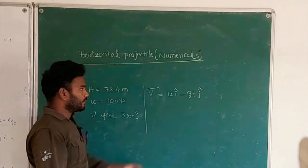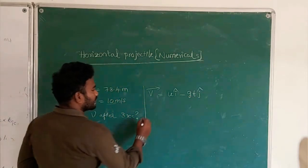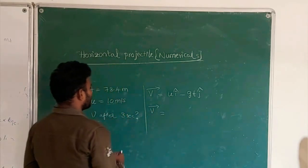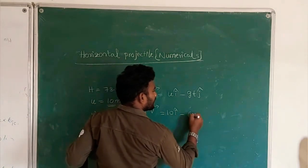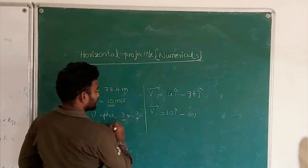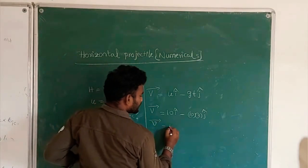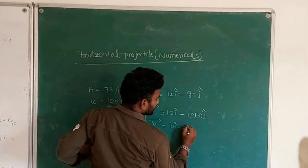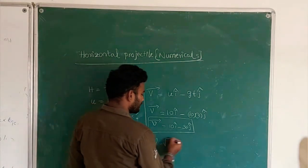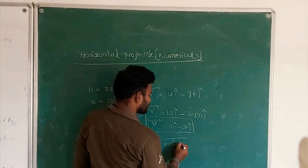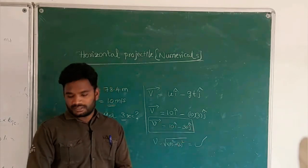The velocity vector V = 10 î − (10 × 3) ĵ = 10 î − 30 ĵ. That is the answer. If you want the magnitude, you find √(10² + 30²). But since they asked in vector form, the answer is 10 î − 30 ĵ.